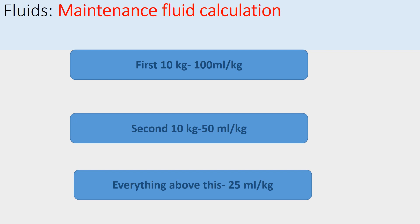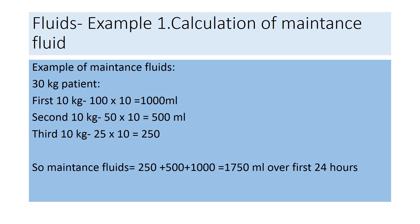For maintenance fluid calculation, for the first 10 kg we give 100 mls per kg, for the second 10 kg we give 50 mls per kg, and for everything above 20 kg we give 25 mls per kg. For a 30 kg patient: first 10 kg gives 1,000 mls, second 10 kg gives 500 mls, third 10 kg gives 250 mls — totaling 1,750 mls as maintenance fluids over the first 24 hours.